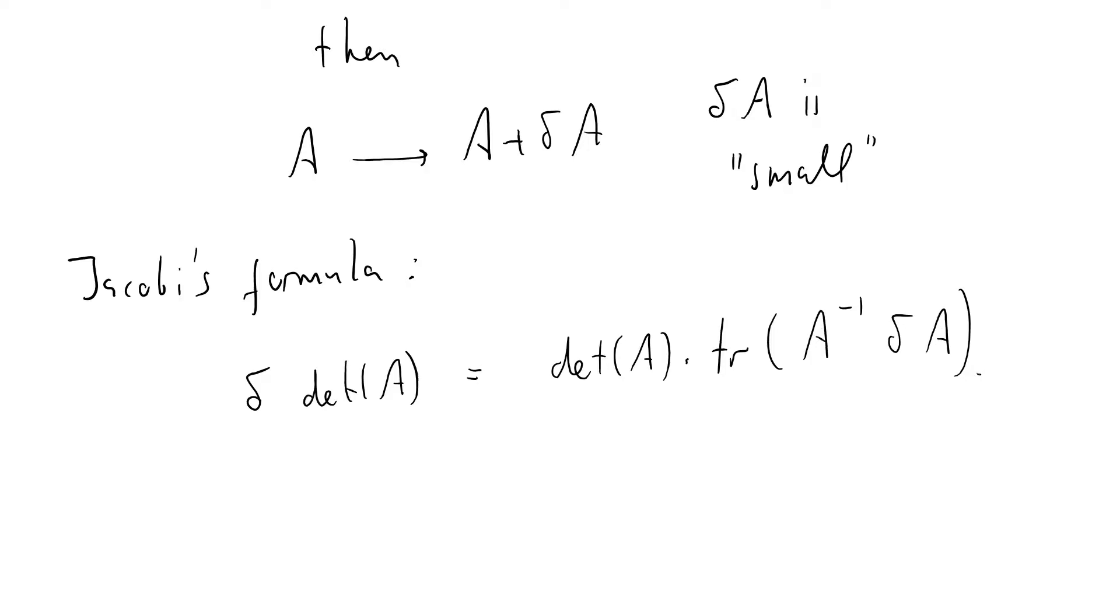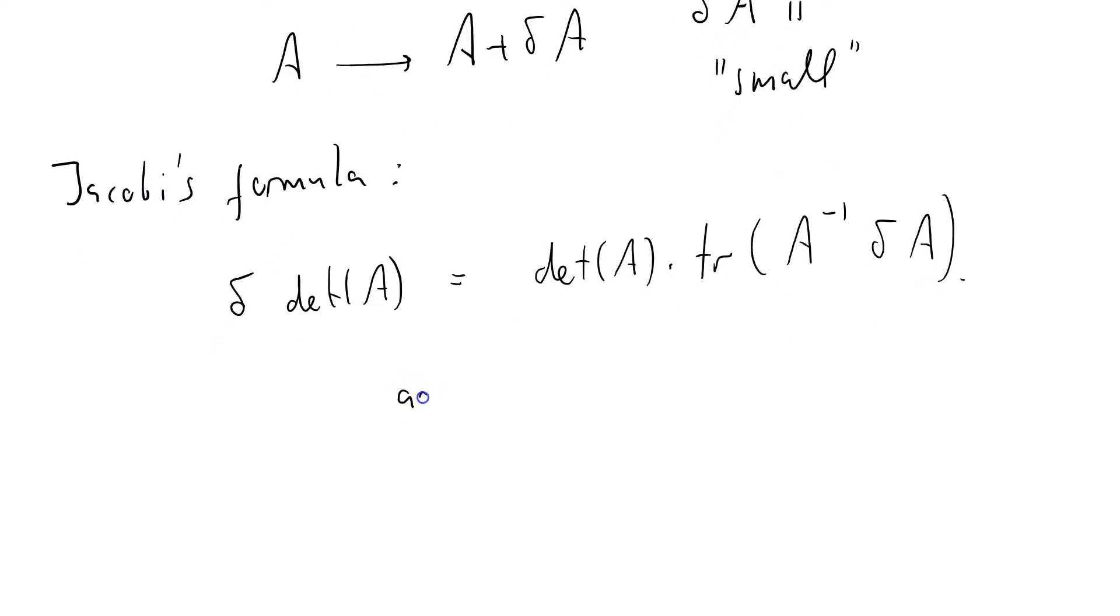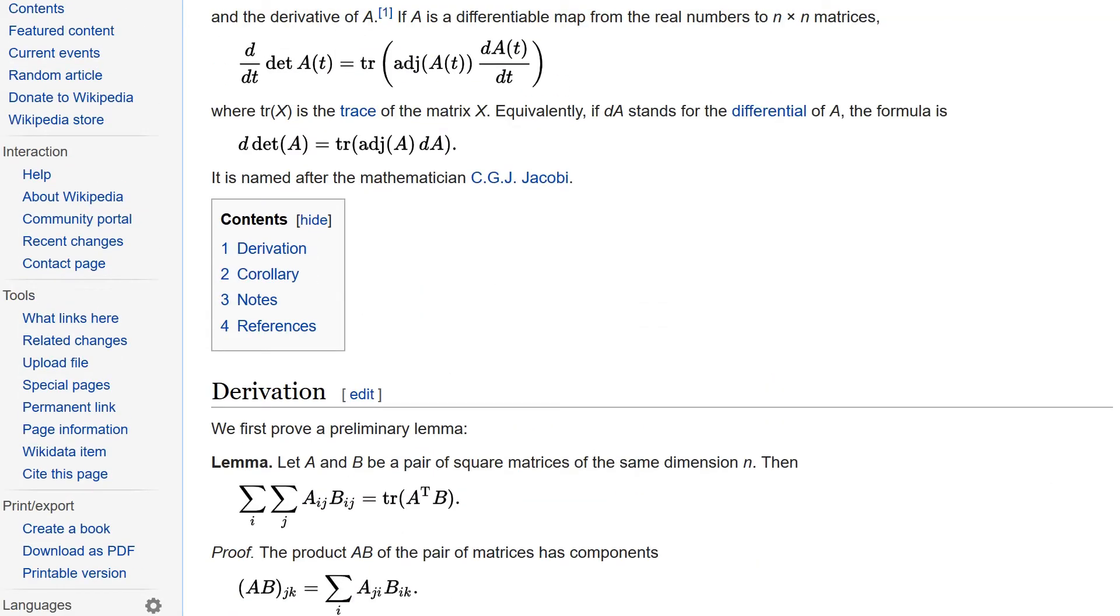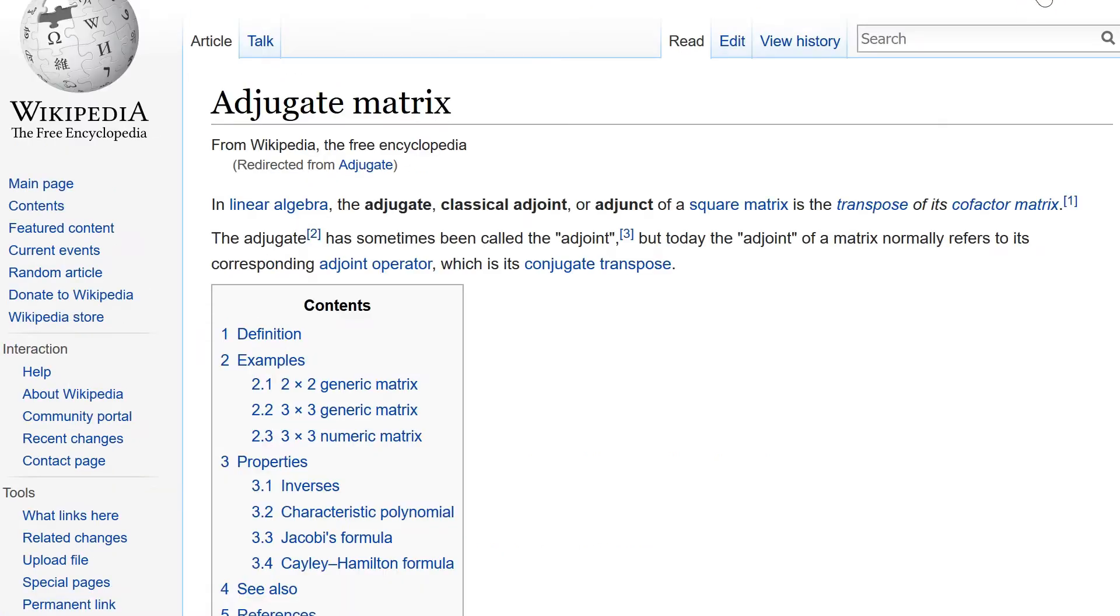Jacobi's formula says this, that delta of the determinant of A equals the determinant of A times the trace of A to the minus 1 delta A. Now, what you see in the books is you see something called an adjugate of A, which equals, see if I can get this right, that's the determinant of A times A minus 1 if A is invertible.